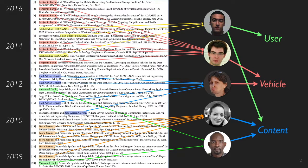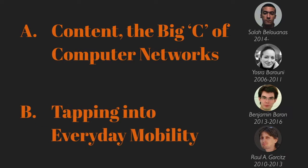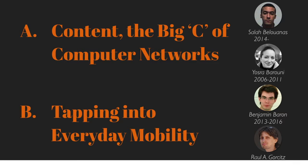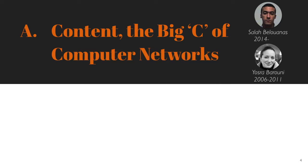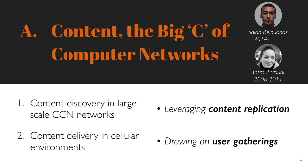The common feature that has attracted my efforts is mobility. The first part of this presentation addresses the mobility of the content and the users. In a second part, I consider the mobility of vehicles acting as carriers of content. I present two pieces of work. The first is concerned with large-scale CCN networks, leveraging the high degree of replication of popular content. The second considers the mobility of users in cellular environments, taking advantage of user gatherings to maximize the benefits of each single transmission.